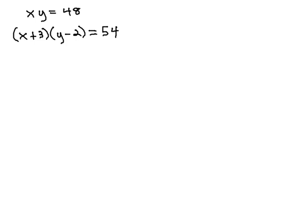In this video, we're going to solve a simultaneous product of two equations with a product working together simultaneously. We have x times y equals forty-eight and x plus three times y minus two equals fifty-four.